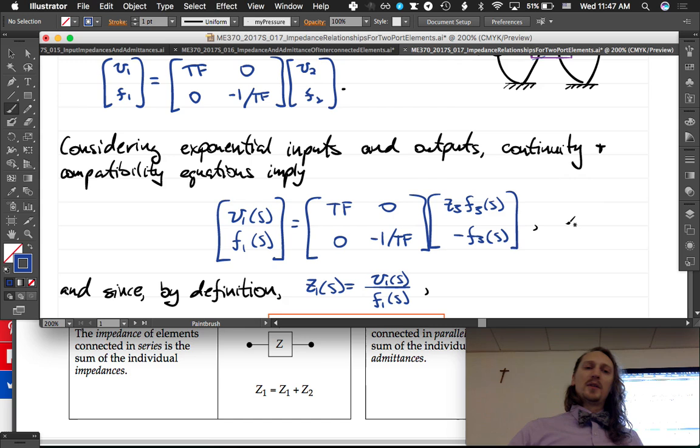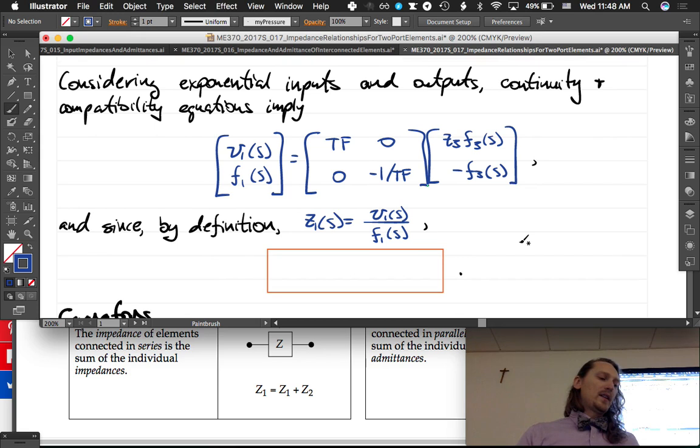We can work out what the algebra is, but if you were to take those two equations—this is v1 equals tf times z3 times f3, and this one is f1 equals negative 1 over tf times negative f3—and you were to solve for what z1 is, the ratio of v1 over f1, which is what it is by definition, right?